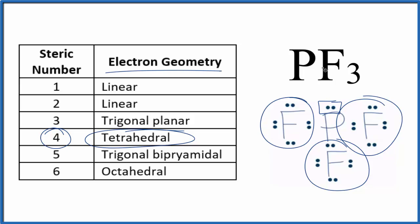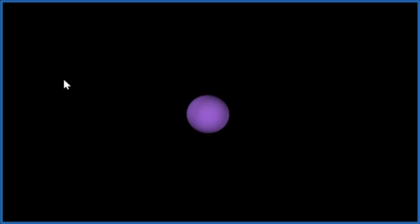This is different than the molecular geometry. Let's look at that in three dimensions. So the purple, that'll be the phosphorus in the center of our atom.